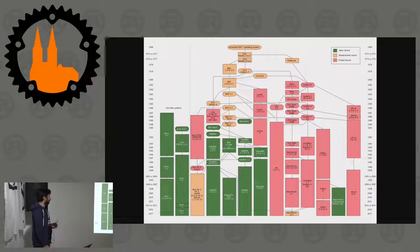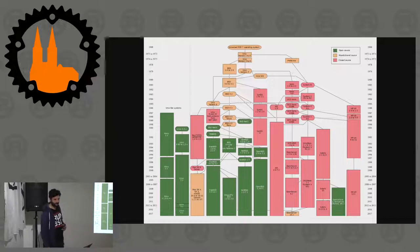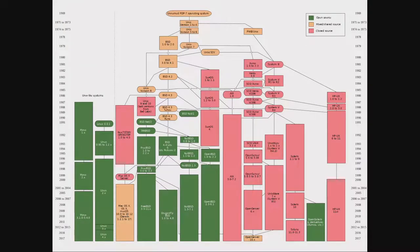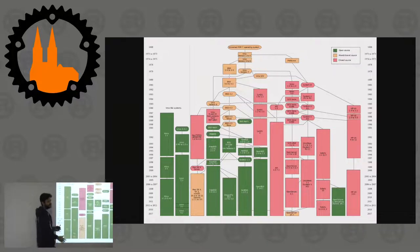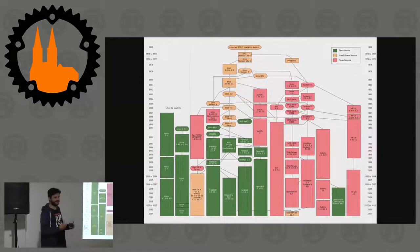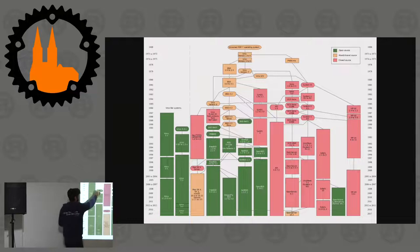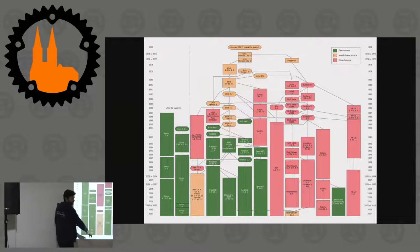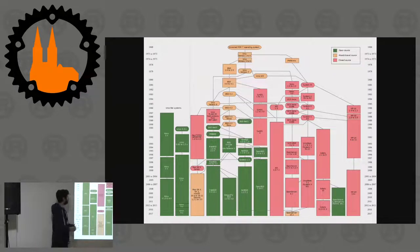This is a picture of basically the history of Unix. As you can see, there is a small line here — the Unix family and Unix-like systems. You can find it on Wikipedia. Here there is Linux — it's a completely independent tree. As everyone knows, Linus Torvalds started it in 1991 with his own tree, and it evolved until now.